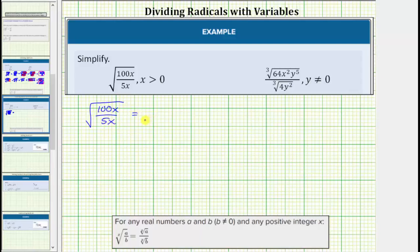To show this, let's write 100x as 20 times 5x. Notice in this form, we can see that 5x divided by 5x will simplify to one, and therefore the radical simplifies to the square root of 20.